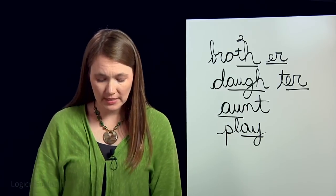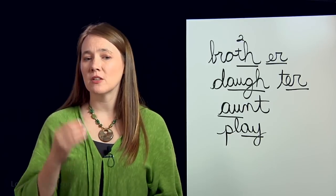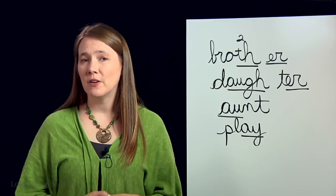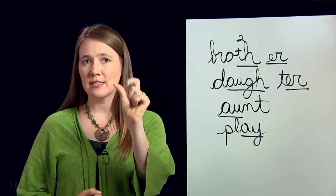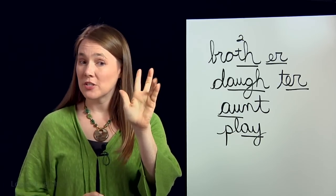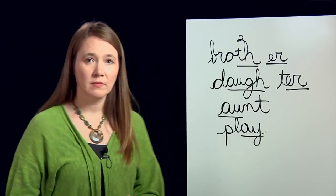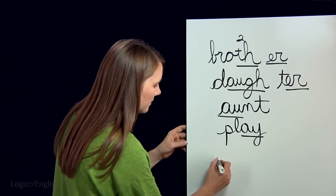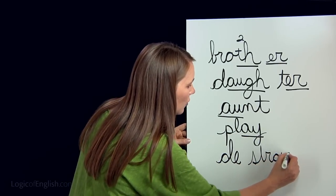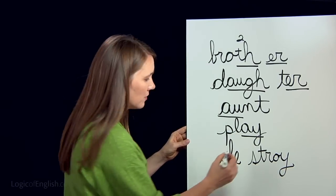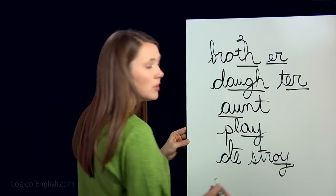The tenth and last word is 'destroy' — 'Gophers destroy the grass.' How many syllables in de-stroy? Two. First syllable: D-E. Second syllable: stroy — S-T-R-oi. Which kind of 'oi'? That's right, 'oi' that we may use at the end of English words. Write it: D-E-S-T-R-oi. Put a line over the E — it says its name because it's at the end of the syllable. Underline the 'oi.'